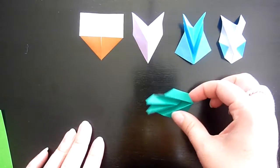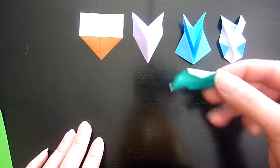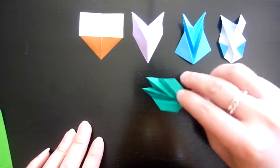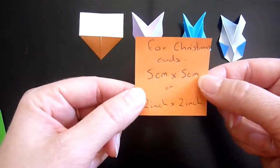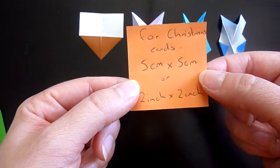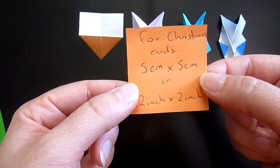Today I will be showing you how to make Christmas leaves for your Christmas cards. It takes four steps and recommended paper size is 5cm x 5cm or 2 inch x 2 inch.